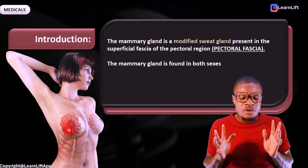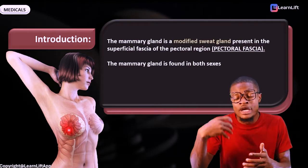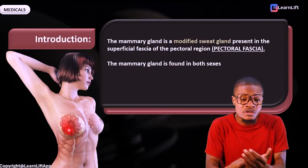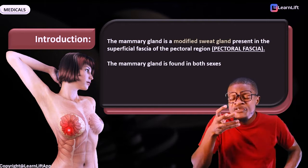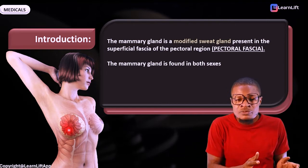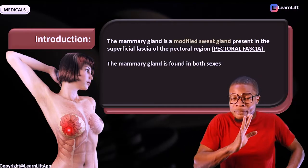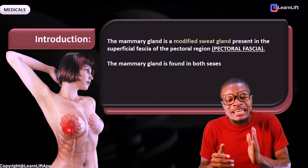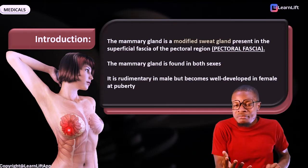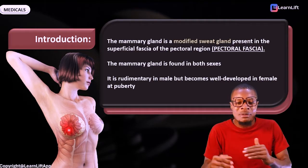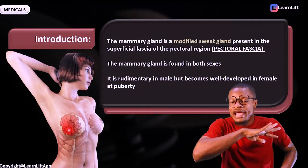The mammary gland is found in both sexes. Note that breast and mammary gland refer to the same thing, but mammary gland is a feature of all mammals. The special name given to the mammary gland of the female is called breast. The mammary gland is rudimentary in males but becomes well developed in females at puberty, which is why almost all females have breasts after puberty.